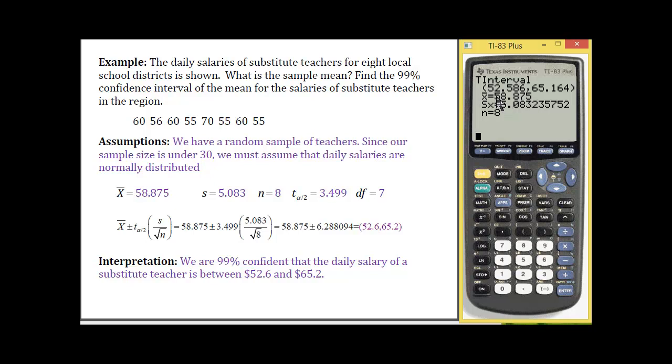And so I've rounded this. My precision for my data was in just digits. So I'm going to give a little more precision, one more decimal point, and so I'm rounding that to 52.6 and 65.2, and so I've got my confidence interval ranging between those two values.